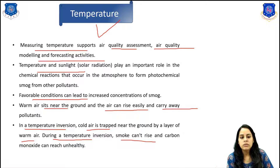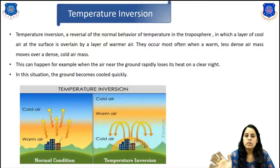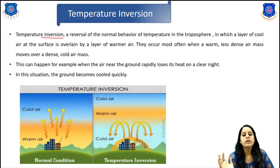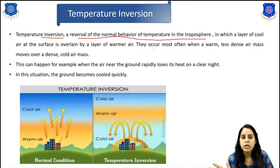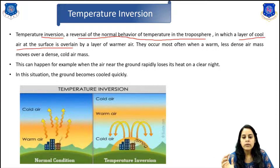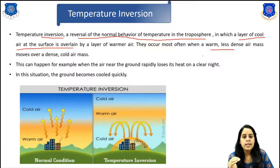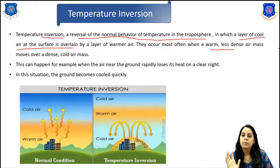What is temperature inversion? Temperature inversion is a reversal of the normal behavior of temperature in the troposphere, in which a layer of cold air at the surface is overlaid by a layer of warmer air. They occur most often when a warm, less dense air mass moves over a dense, cool air mass.